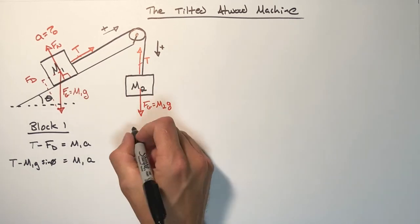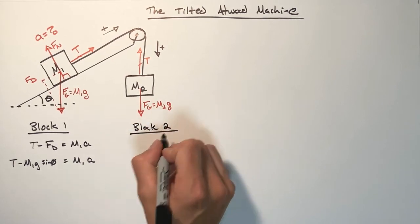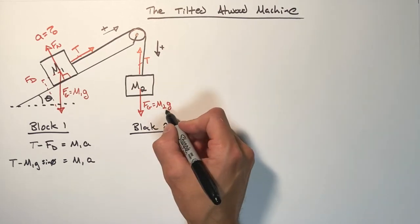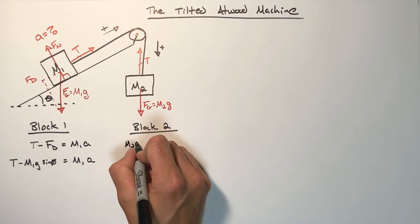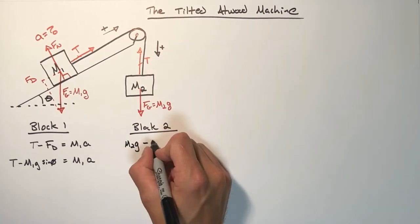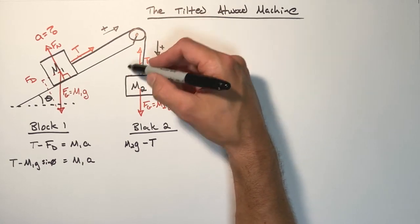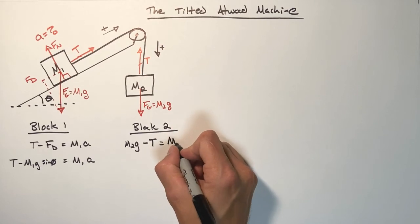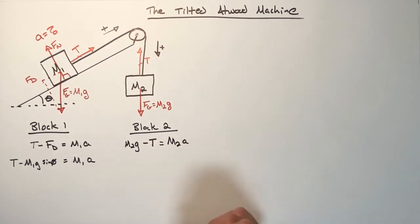So looking at the second block, we need to be a bit careful about the signs. Here we actually have the weight is positive. We're going to have the tension is negative because it is acting upward. And for this block over here, upward is the negative direction. That's going to equal m2a. Again, we just have the sum of all forces equals ma.